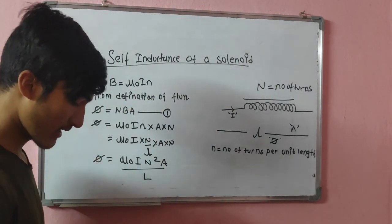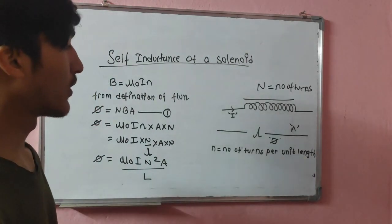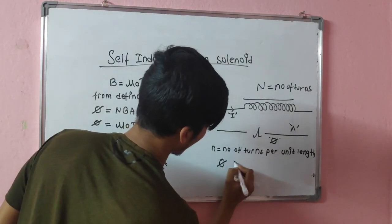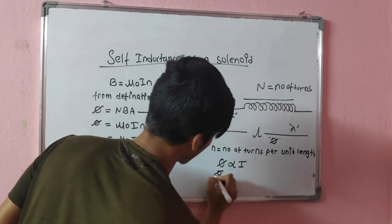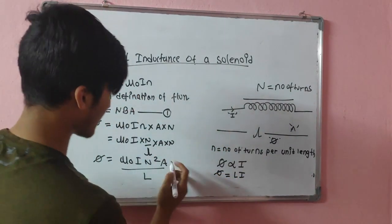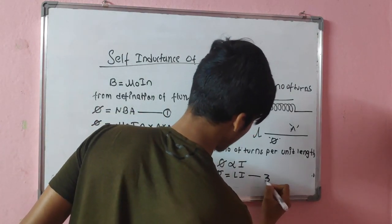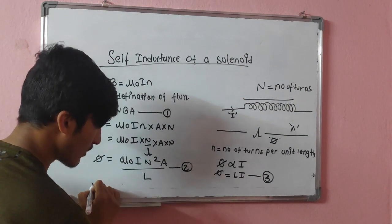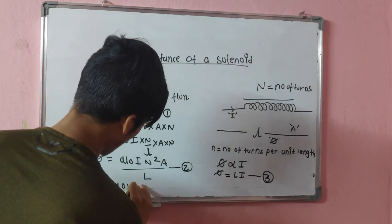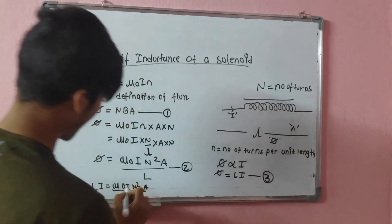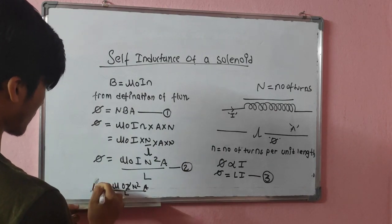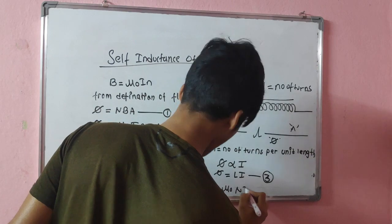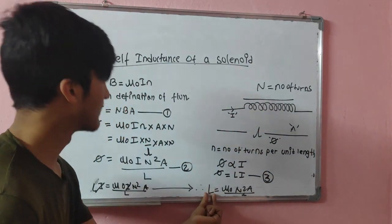We have already discussed that from Faraday's law of electromagnetic induction, whenever there is a change in the flow of current, there is a change in flux. So φ is directly proportional to I, which can be written as φ = LI (equation 3). From equations 2 and 3 we can equate both expressions for φ: LI = μ₀IN²A / l. Cancelling the term I, we get L = μ₀N²A / l.